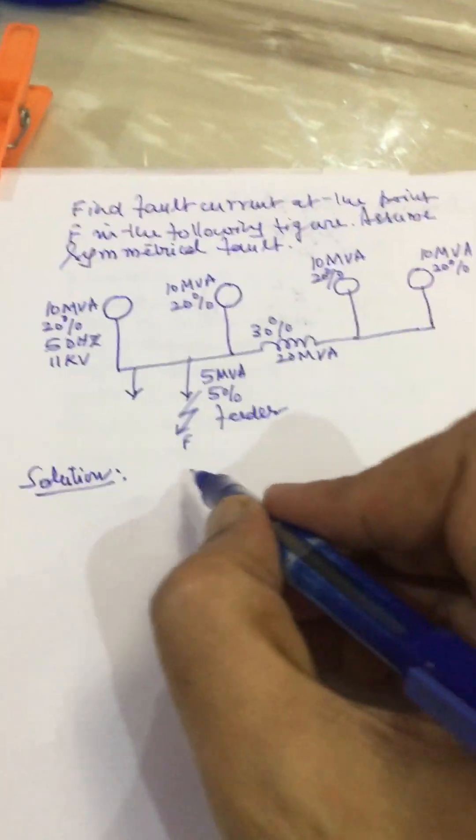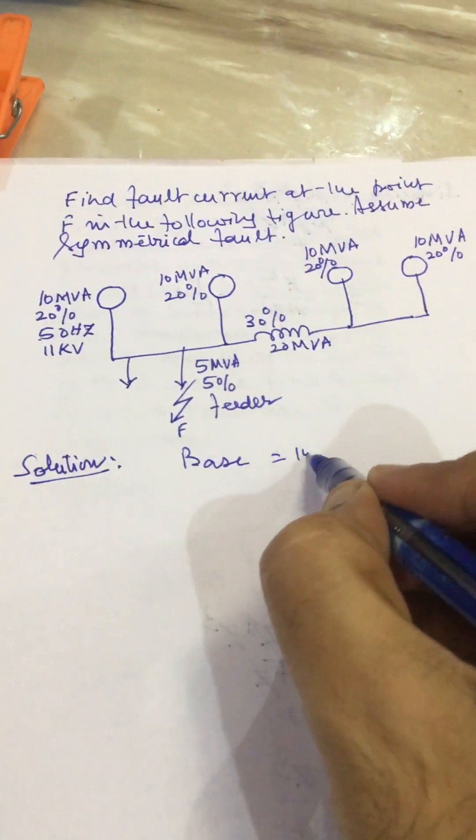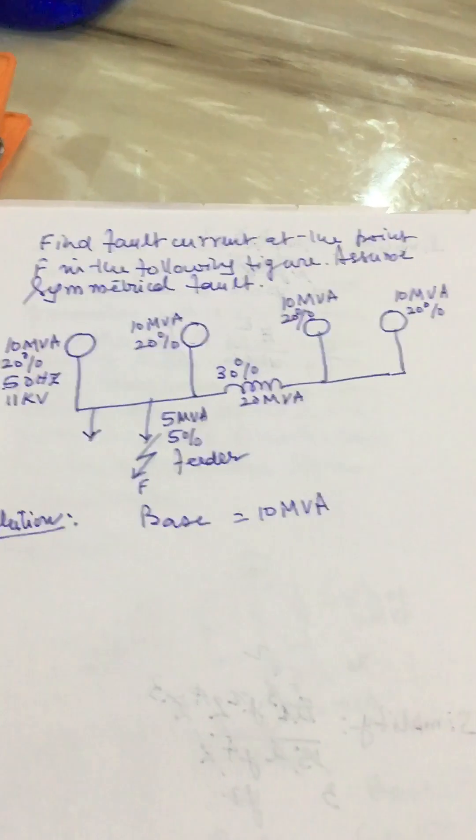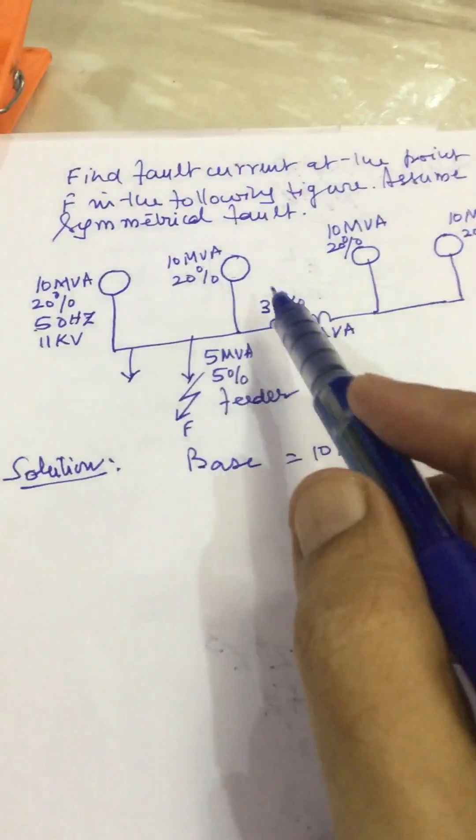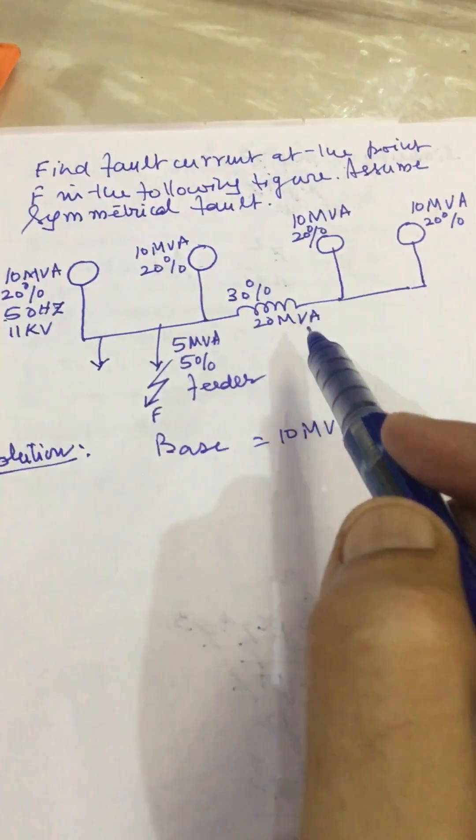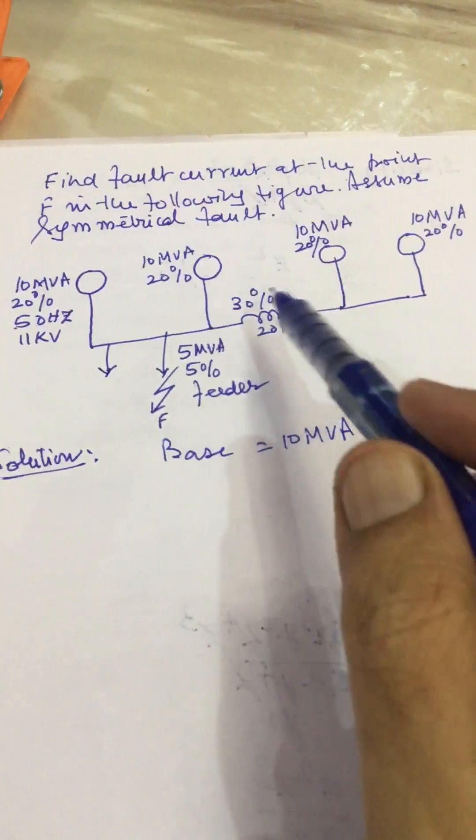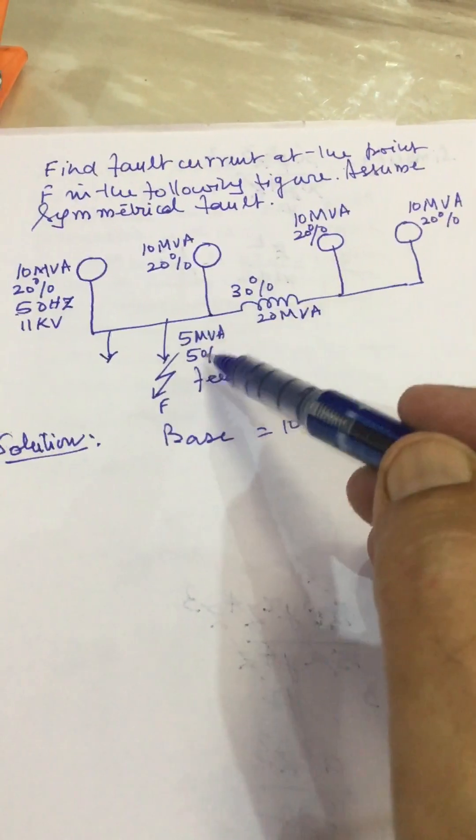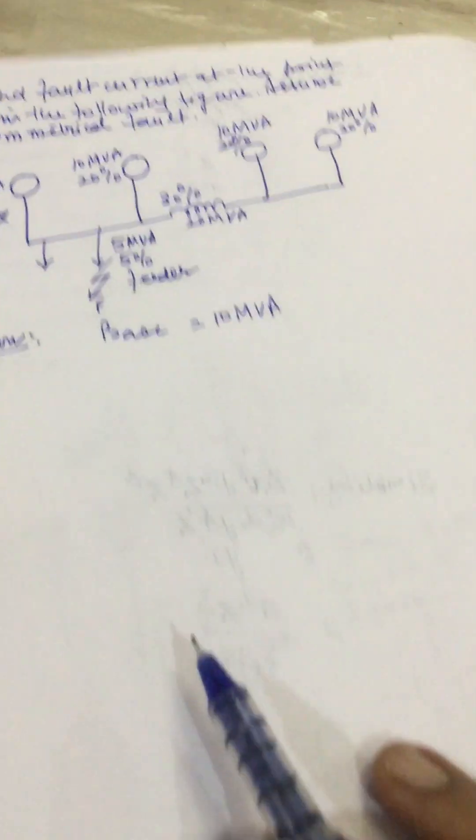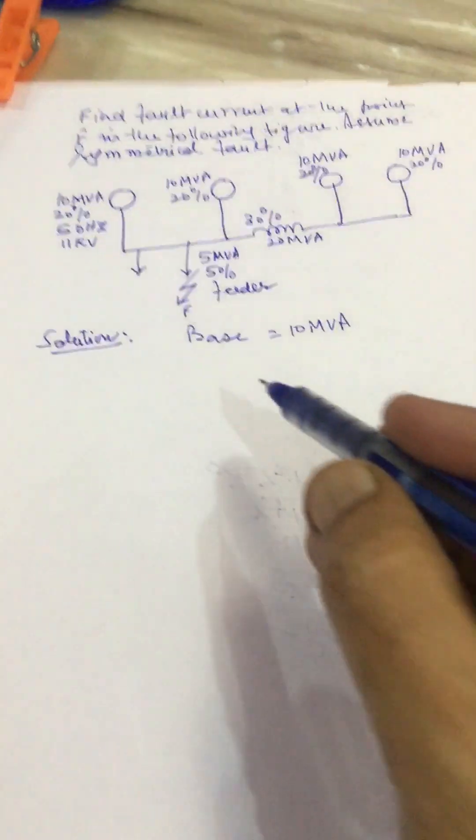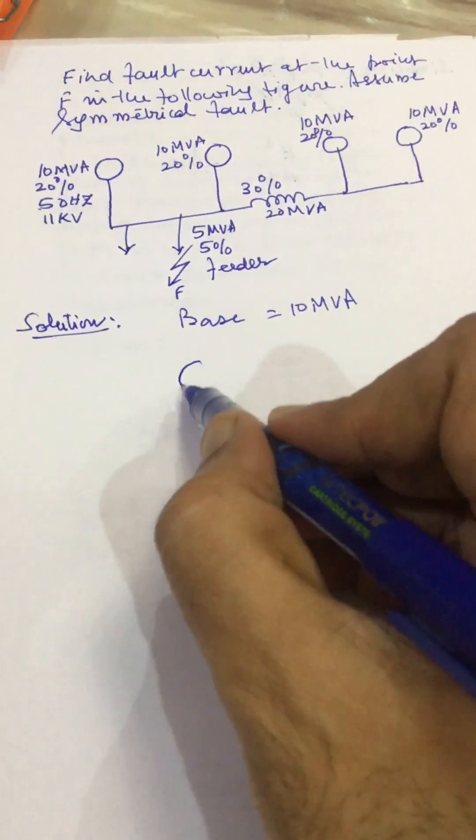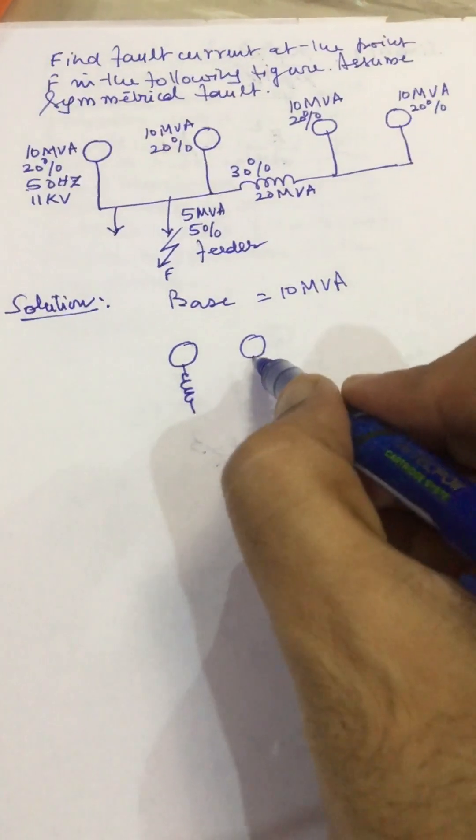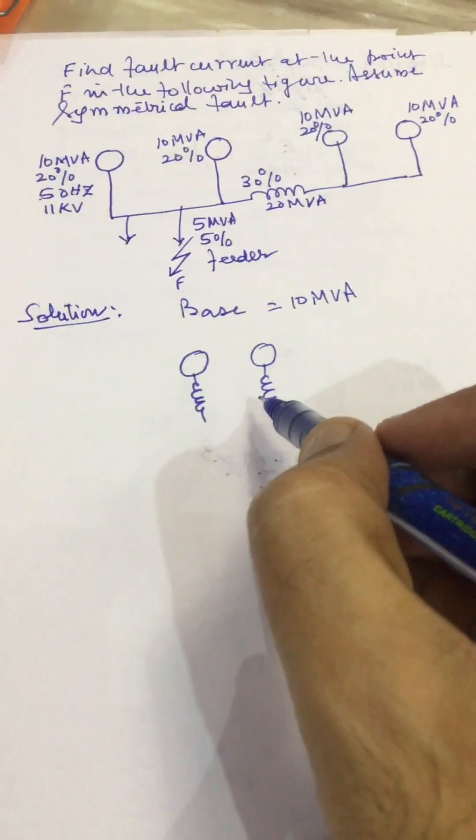Base we will assume 10 MVA, because these generators are rated as 10 MVA, we assume base as 10 MVA and these reactances will remain same, only thing we will have to change these 2 reactances to base 10 MVA. From this we can draw the following single line diagram or reactance diagram.